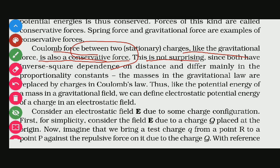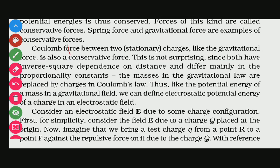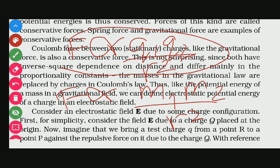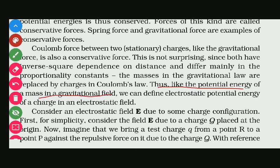In the third case, this is not surprising since both gravitational and electrostatic forces have inverse square dependence on distance and differ mainly in the proportionality constant. The masses in the gravitational law are replaced by charges in Coulomb's law. Thus, like the potential energy of a mass in a gravitational field, we can define electrostatic potential energy of a charge in an electrostatic field.